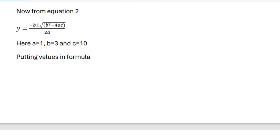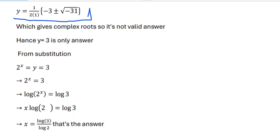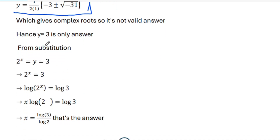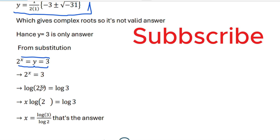Since the complex roots are invalid, the only solution is y equals 3. Substituting back into our substitution 2 to the power x equals y, we get 2 to the power x equals 3. Taking log on both sides: x log 2 equals log 3, so x equals log 3 divided by log 2. That is the answer to our equation. Thanks for watching.